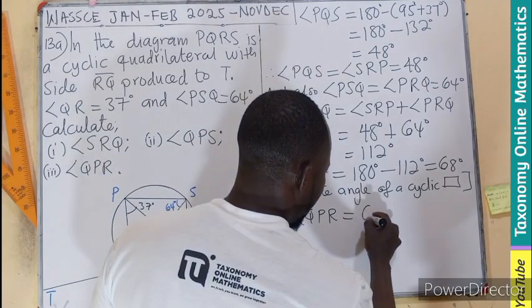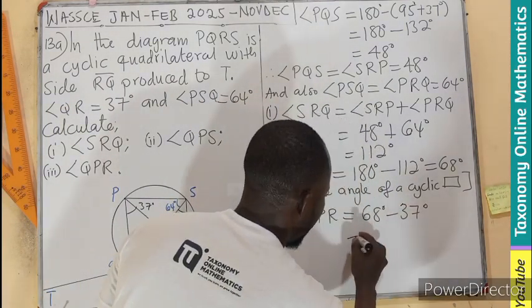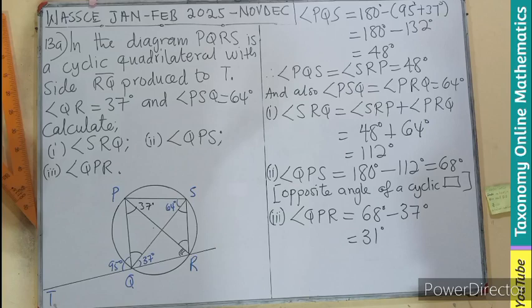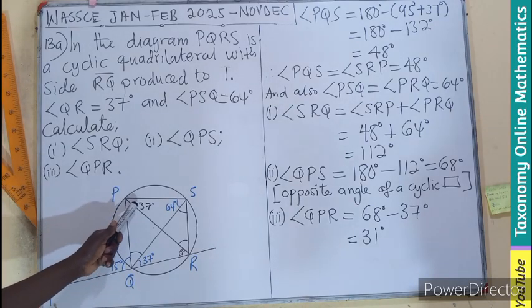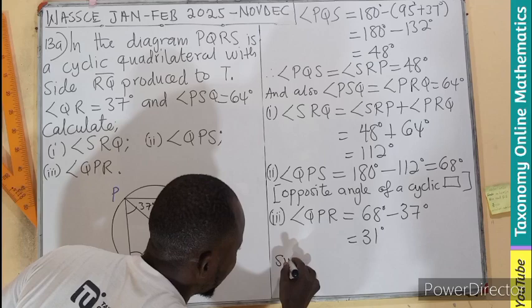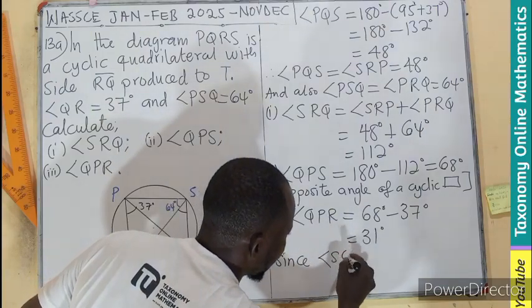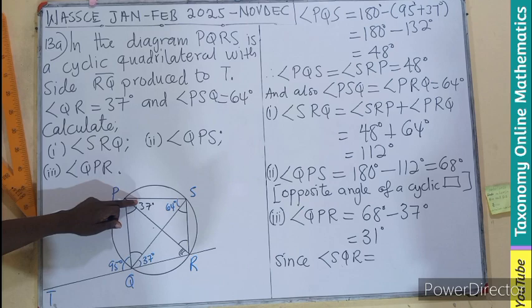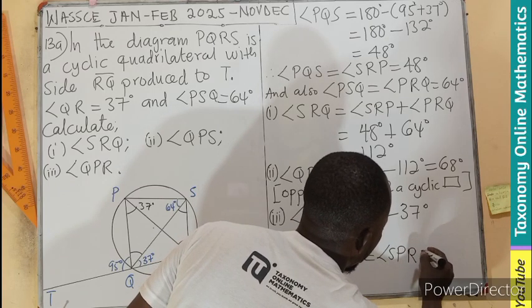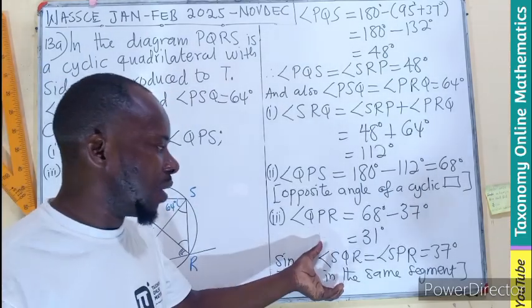So angle QPR equals 68° minus 37°, which equals 31°. What property makes this work? This and this are angles in the same segment, so angle SQR equals angle SPR, both equal to 37°.